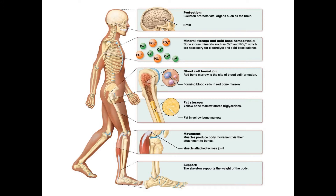Let's start by laying the foundation with the actual functions of the skeletal system. Immediately most people think of structure and support. No doubt this is one of the primary functions. Bone provides the scaffolding needed to support your body and anchor points for the muscles to attach. Without points of attachment, muscles would not be able to produce movements around joints. Another common function that most people would predict would be protection. Bones wrap around vital organs like the skull for the brain and ribs for the lungs and heart. Without these protective structures, small bumps could be fatal.